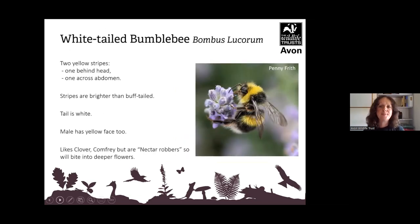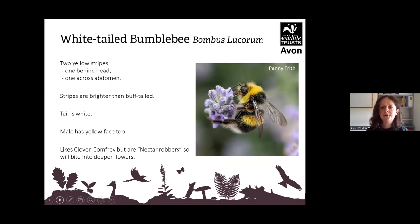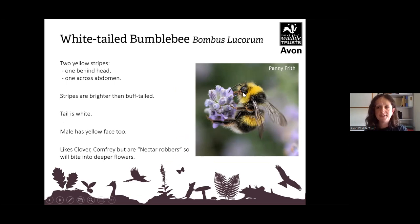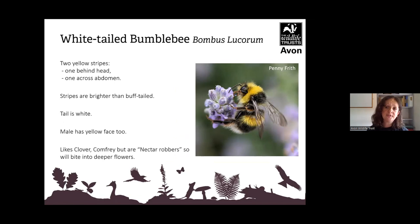The white-tailed bumblebee, Bombus lucorum, has two yellow stripes — one behind the head and one across the abdomen — and the stripes are brighter than the buff-tailed. The tail is completely white. The pictured male also has a yellow face, whereas female workers don't. These bees like clover and comfrey and are also nectar robbers, so they will bite into deeper flowers if they want.